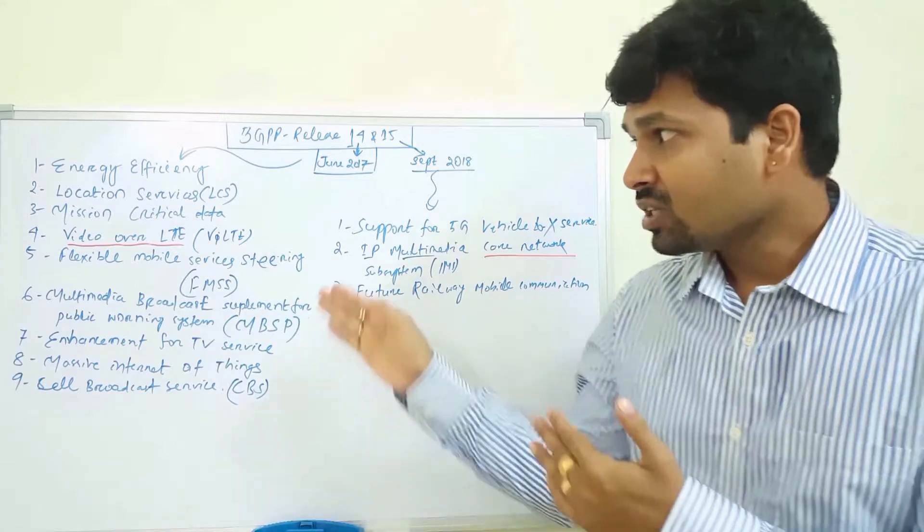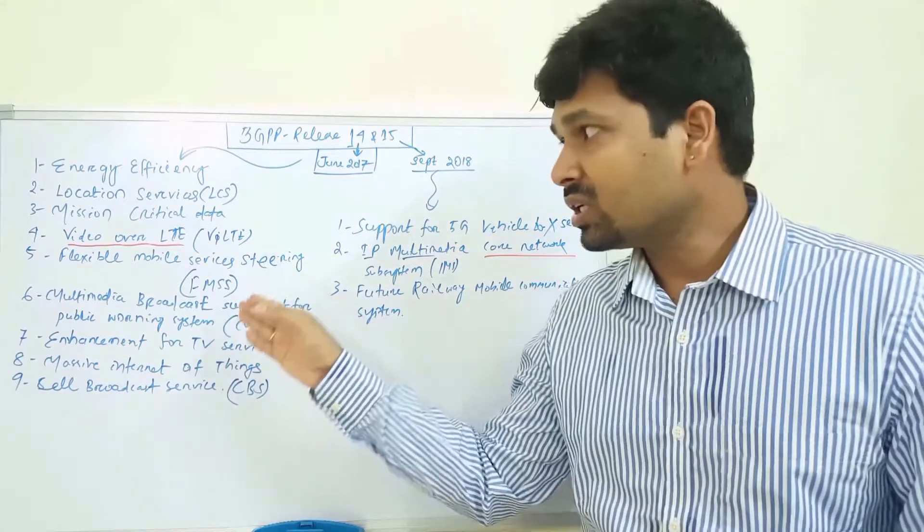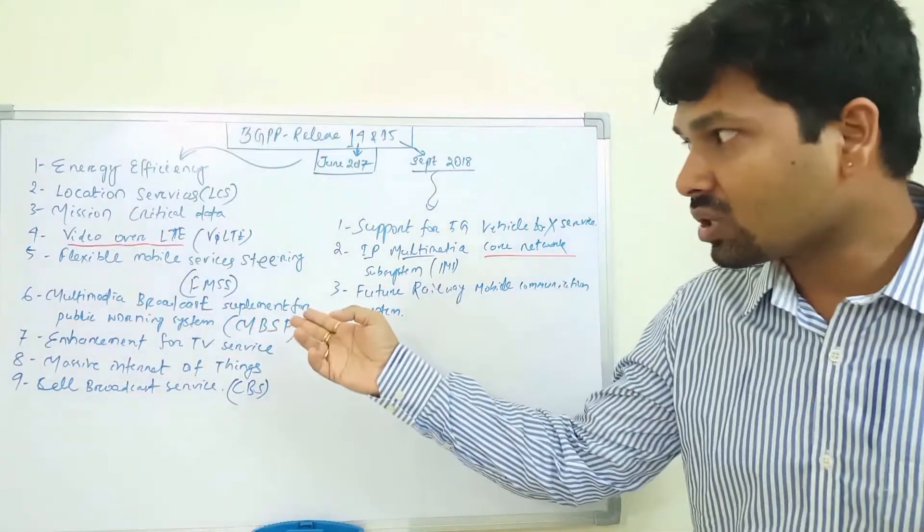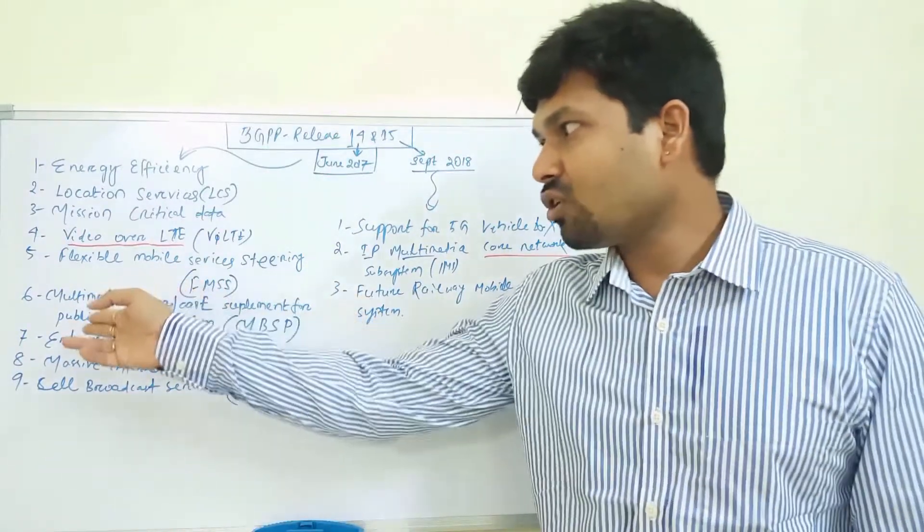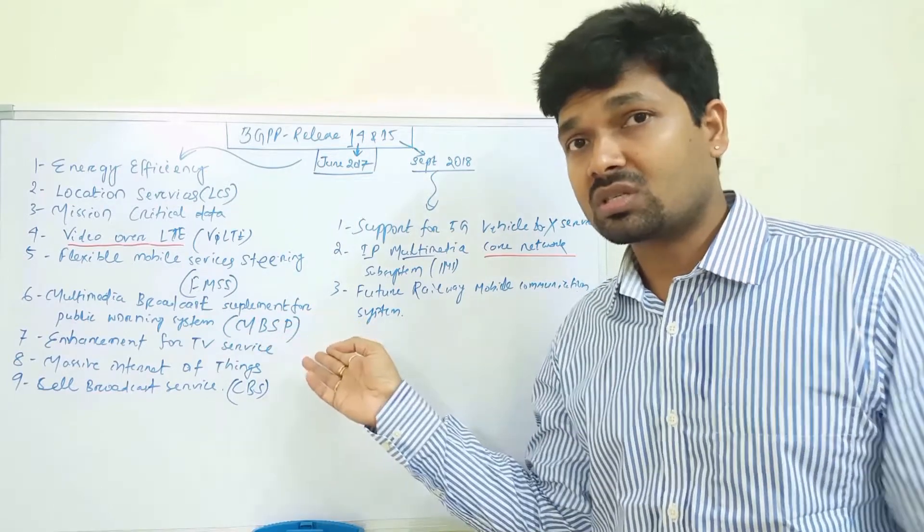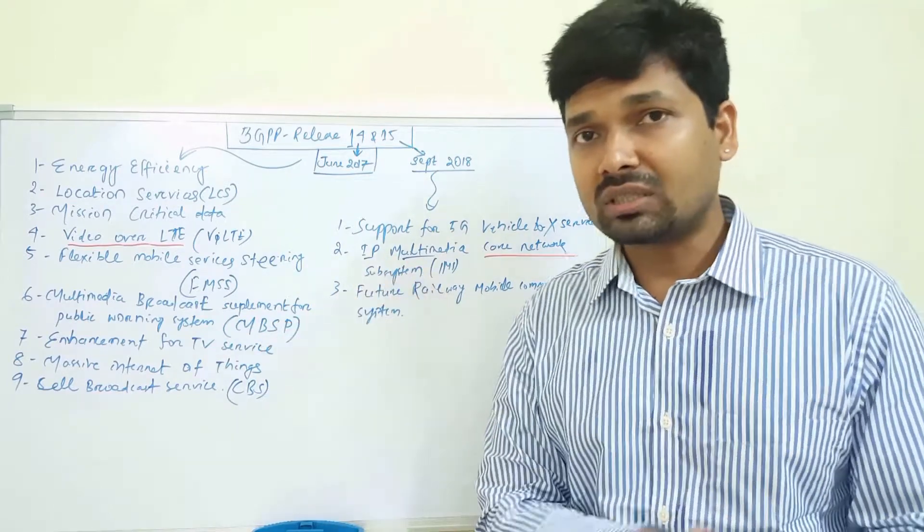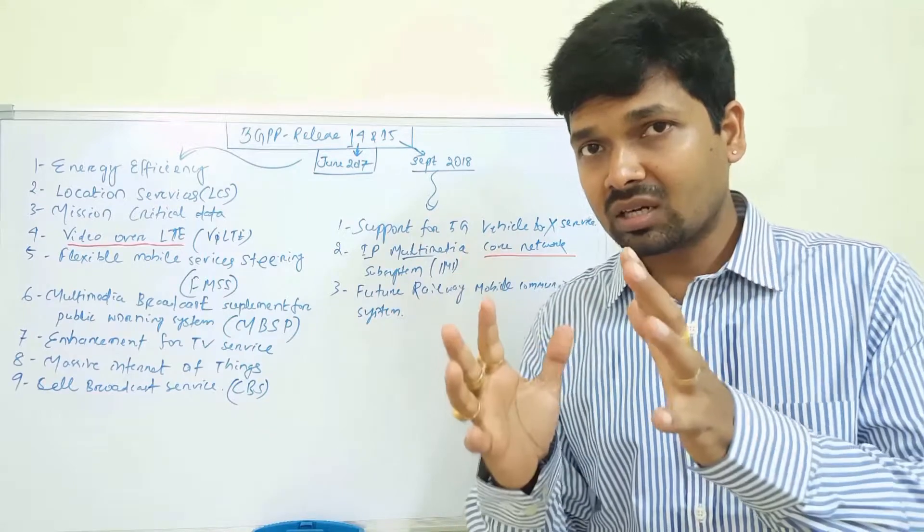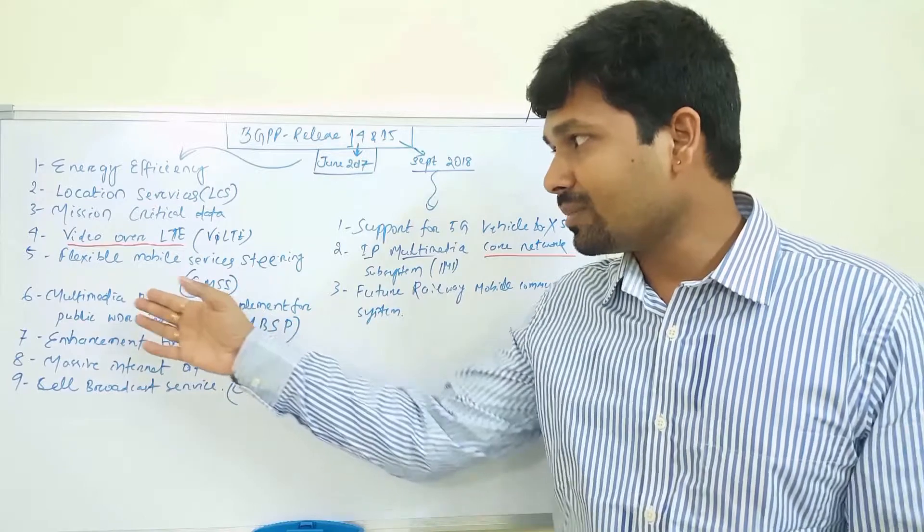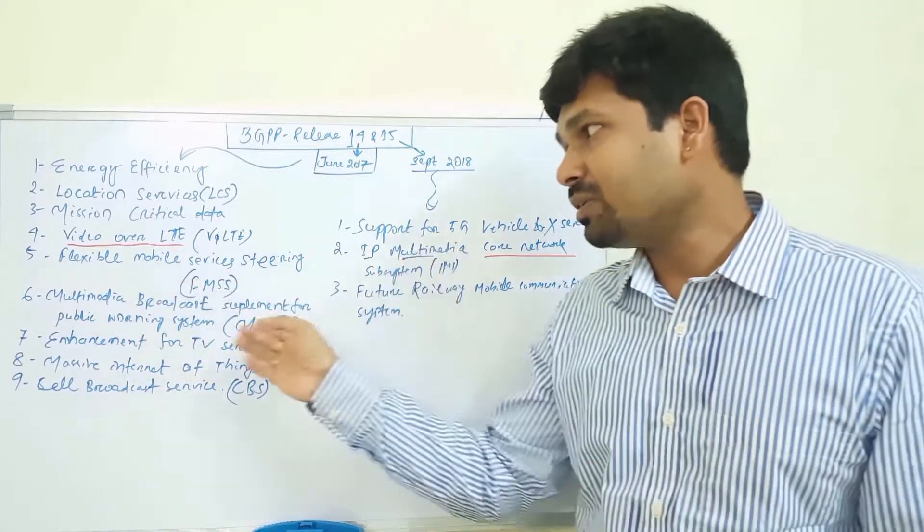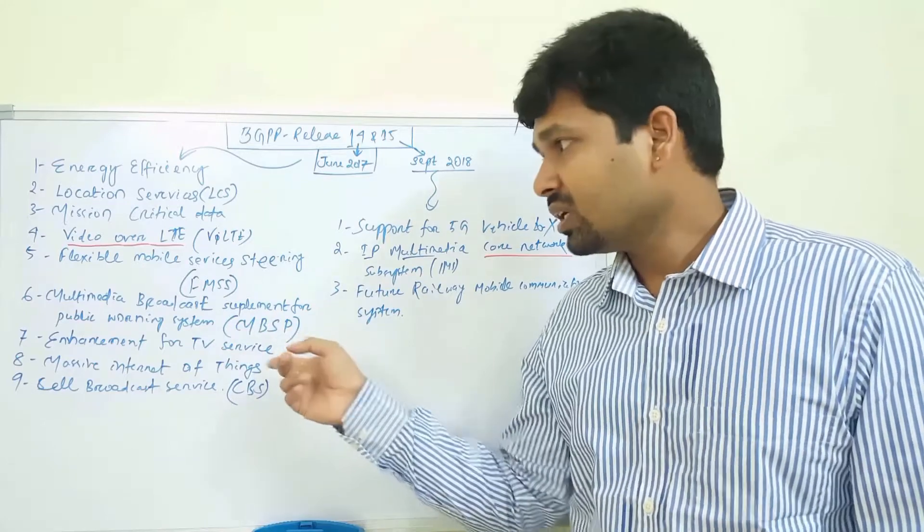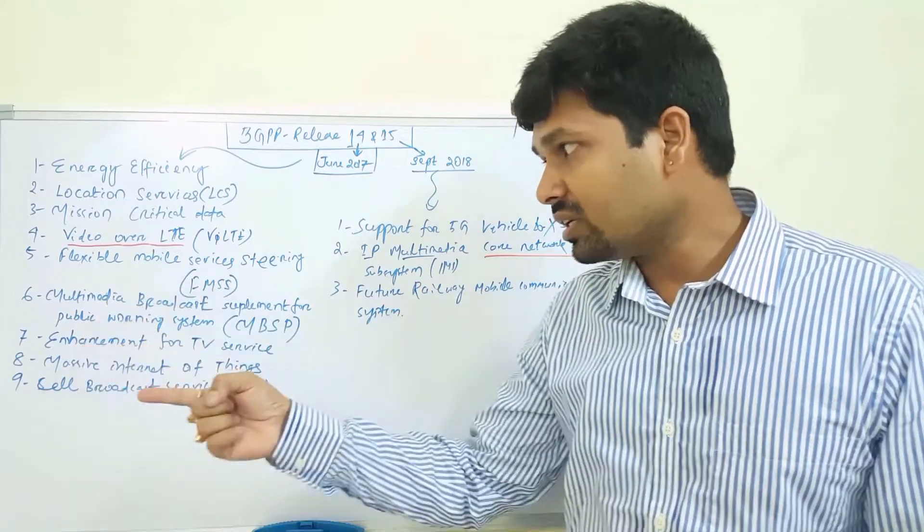We are having Flexible Mobile Service Steering or FMSS. Six one is the Multimedia Broadcast Supplement for Public Warning System (MBSPWS), which is earlier MBMS or Multimedia Broadcast Multicast Services. There is a little bit of enhancement here, so it's called Multimedia Broadcast Supplement for Public Warning System or MBSPWS.